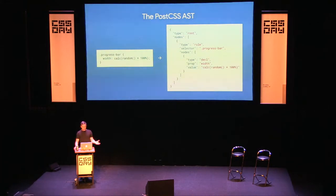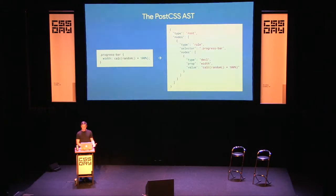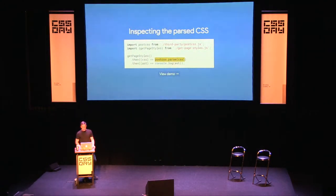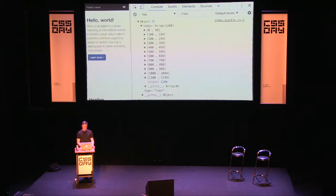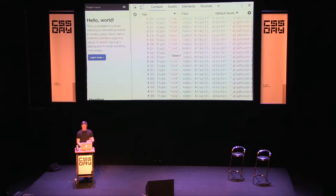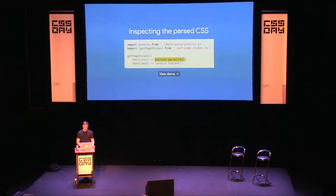The parser takes a style rule and transforms it into an Abstract Syntax Tree — a large nested object where each node has child nodes. This is what the PostCSS AST looks like for our styles: nodes with types like comments and rules. The reason you have this AST is that it makes it easier to traverse and replace the bits of CSS you care about. In this next demo, combining PostCSS and our `getPageStyles` helper, we can log and inspect all these nodes.